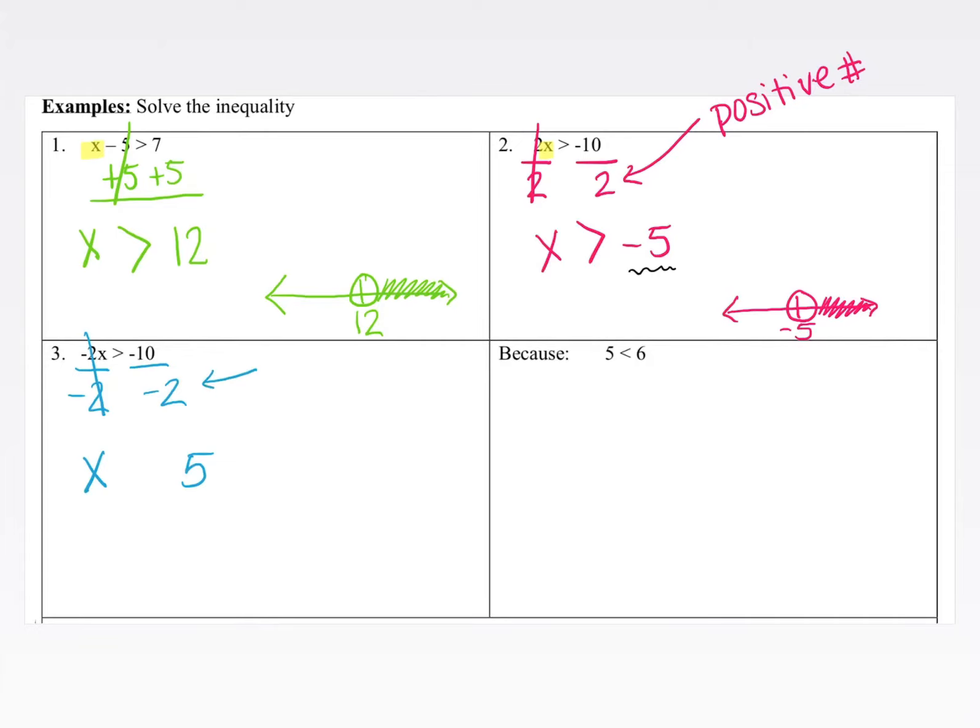But here we divided by a negative number. So instead of x is greater than negative 5, this is going to change to x is less than 5. So our inequality flips. If we were to graph this on a number line, we're going to mark our 5. x is less than 5, so open circle. And since x is less than, we're going to shade all the values that are smaller than 5.